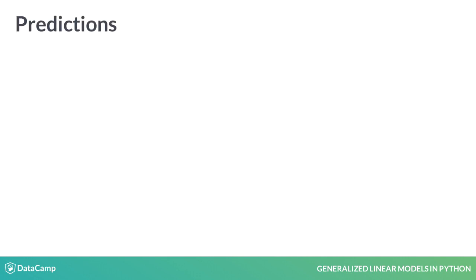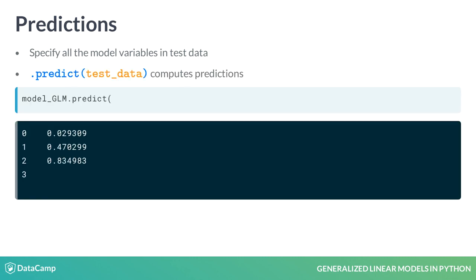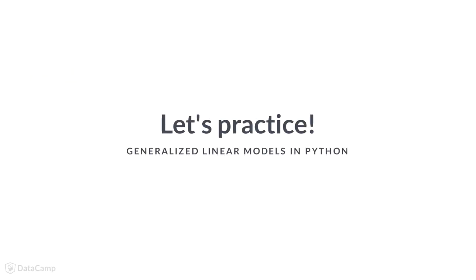When doing predictive modeling, your final goal is to compute and assess predictions given the fitted model and test data. The first step is to specify the test data, which should contain all the variables you have included in the final model. Note that if you don't specify test data, the function uses the data with which the model was fit. Final predictions are computed with predict.